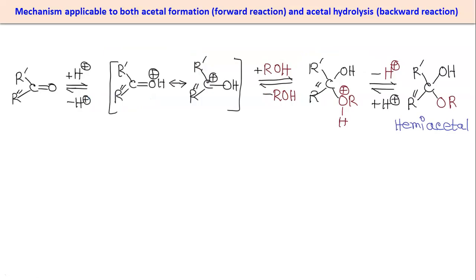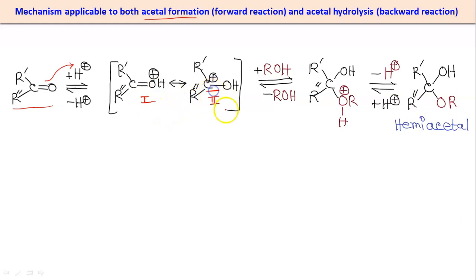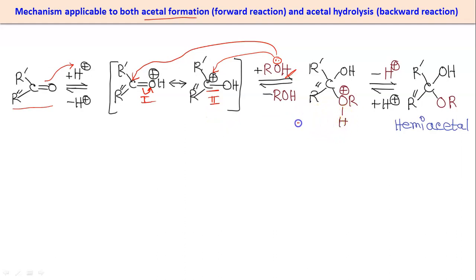Next we will see the mechanism, which is applicable for both acetal formation (the forward reaction) and acetal hydrolysis (the backward reaction). First, the general structure of the aldehyde or ketone is protonated on oxygen in the presence of H⁺. Two resonance structures result: one with positive charge on oxygen and one with positive charge on carbon (carbocation). In the presence of alcohol, the lone pair of oxygen attacks the carbocation carbon, giving a structure where oxygen is neutral; removal of the extra proton leaves oxygen neutral again.